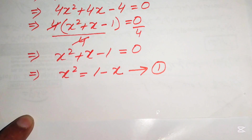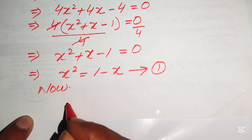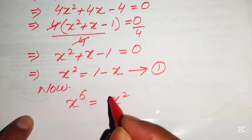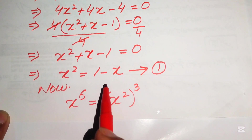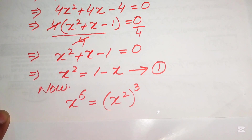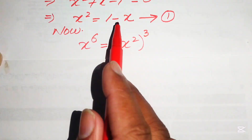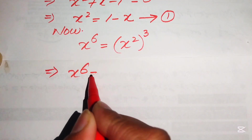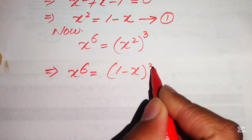Since we need the value of x to the power of 6, we write x⁶ equals (x²)³. We now substitute the value of x² from Equation 1: x² = 1 - x. Substituting, x⁶ equals (1 - x)³.